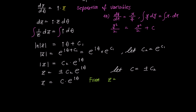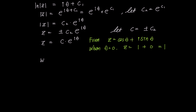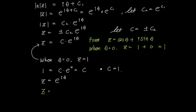Earlier we denoted z as cosine theta plus i sine theta, and using this we can find the value of c. If we substitute theta equals 0, then z equals cosine 0 plus i sine 0, which equals 1 plus 0, which is 1. Substituting theta equals 0 and z equals 1 into our expression, we get 1 equals c times e to the power of 0, which means c equals 1. Since c is 1, z becomes e to the power of i theta, and thus it is equivalent to cosine theta plus i sine theta. In this way, we have demonstrated Euler's formula using a differential equation and an initial condition.